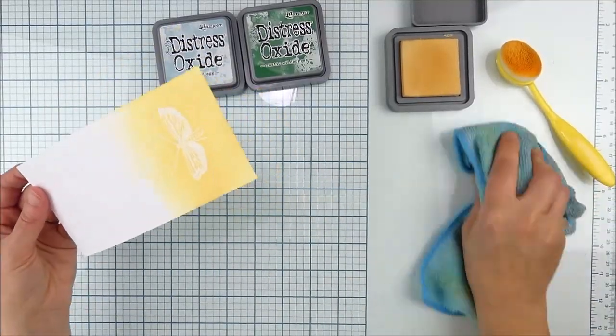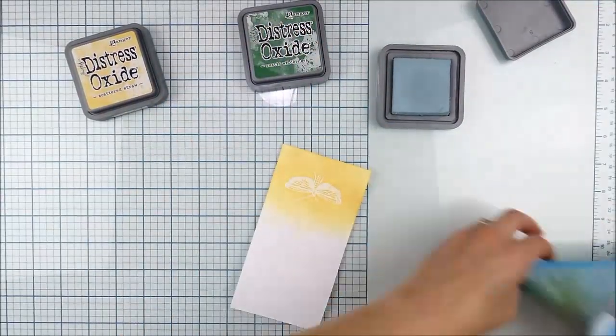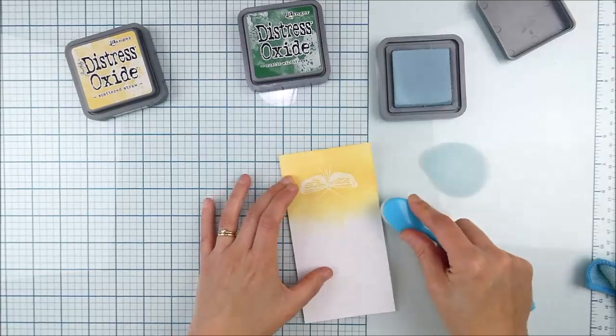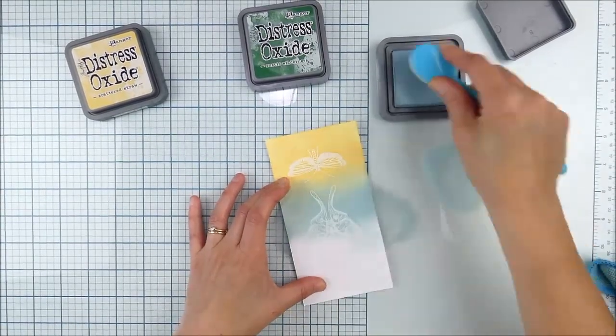Look how easy that is once I wiped over that butterfly image. Did you see how much it popped? The distress oxide sticks onto that image to begin with, and then when you clean that extra off, it'll resist the ink. When you clean it off, you can see that image so much more clearly again.